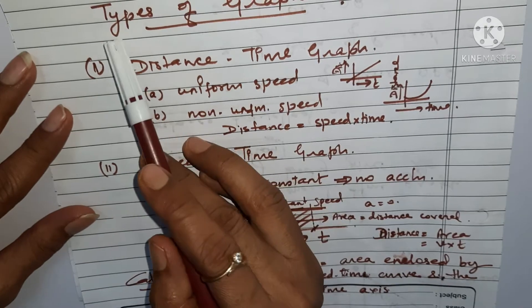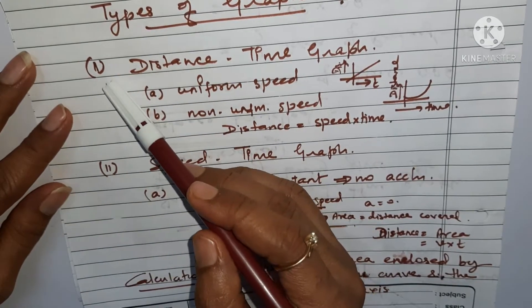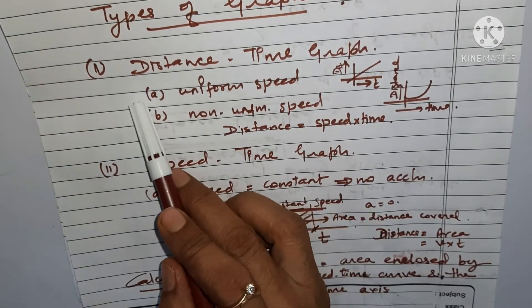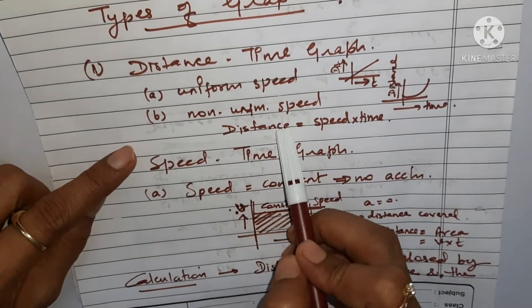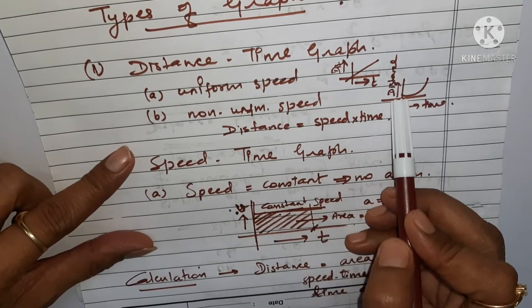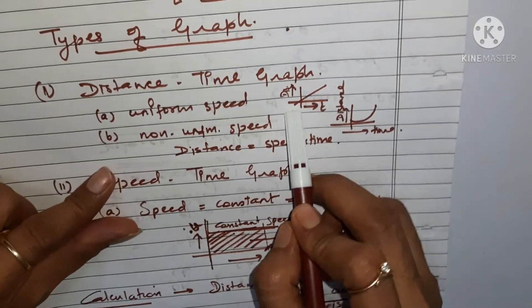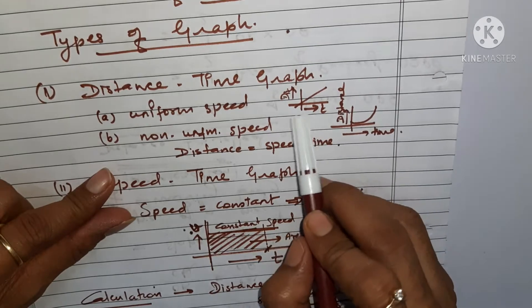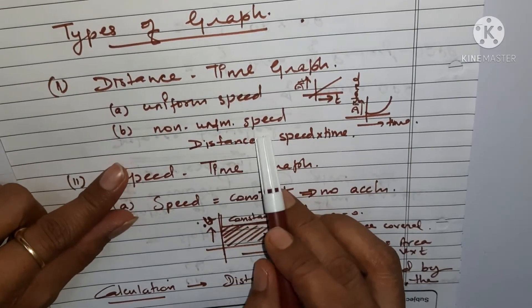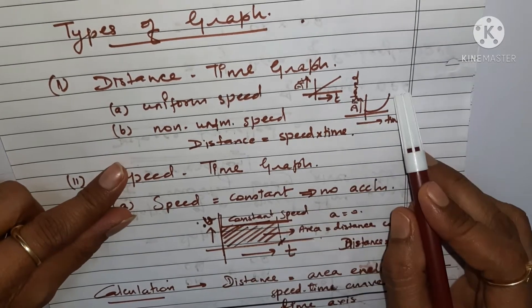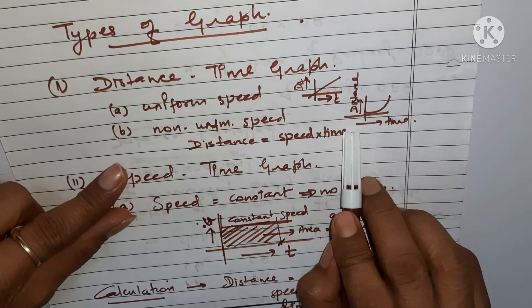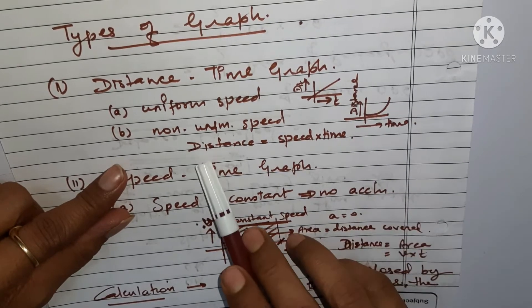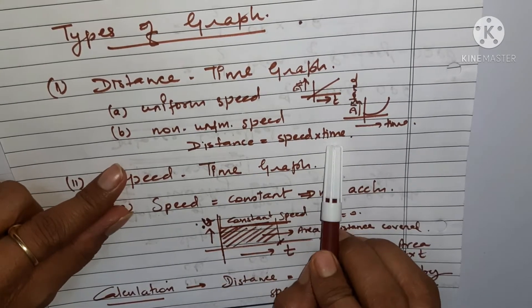There are two types of graphs: the distance-time graph and the speed-time graph. In the distance-time graph, we study uniform speed and non-uniform speed. For uniform speed, we get a straight line graph with time on the x-axis and distance on the y-axis. For non-uniform speed, we get a curve. From these graphs, distance is calculated as speed multiplied by time.